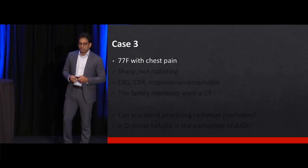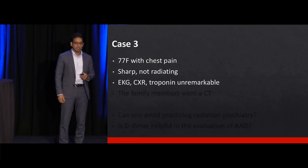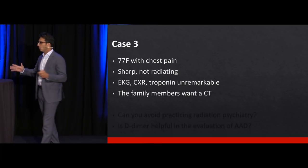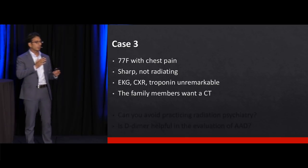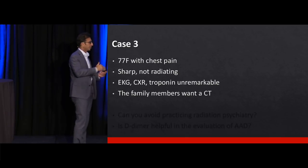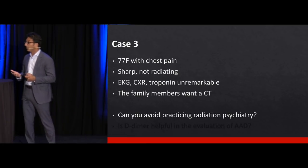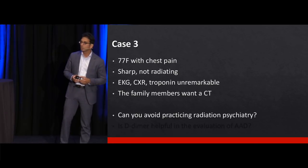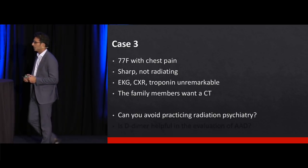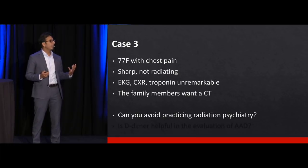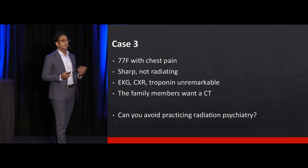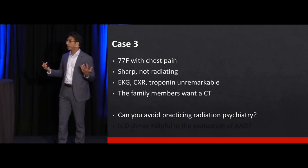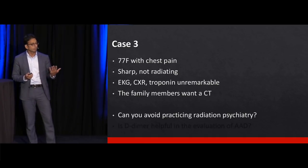Case number three: 77-year-old female with sharp, non-radiating chest pain. EKG, chest X-ray, and troponin are all unremarkable, and the family wants a CT scan. In emergency medicine we sometimes practice what I call 'radiation psychiatry' — using imaging to alleviate patient or family anxiety. But how do we avoid doing a CT on absolutely everyone who has chest pain? This is where D-dimer becomes very helpful.